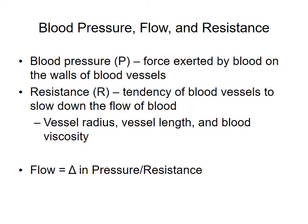The types of things that create resistance include the radius of the vessels, the length of the vessels, and the blood viscosity — how thick the blood is. These are physical characteristics that determine the amount of blood that flows through a vessel and how quickly it flows. Vessels can dilate and become larger, or they can constrict and become smaller. We measure blood flow as the change in pressure divided by resistance over the length of a vessel.